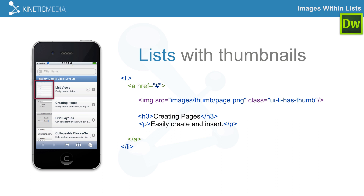What you need to add — and Dreamweaver doesn't do this automatically for you — is a class of ui-li-has-thumb. This will tell jQuery Mobile that this image inside of the list view is going to be on the left-hand side and used as a thumbnail for this list item. You need to add this tag in pretty much every single list item where you want there to be a thumbnail.